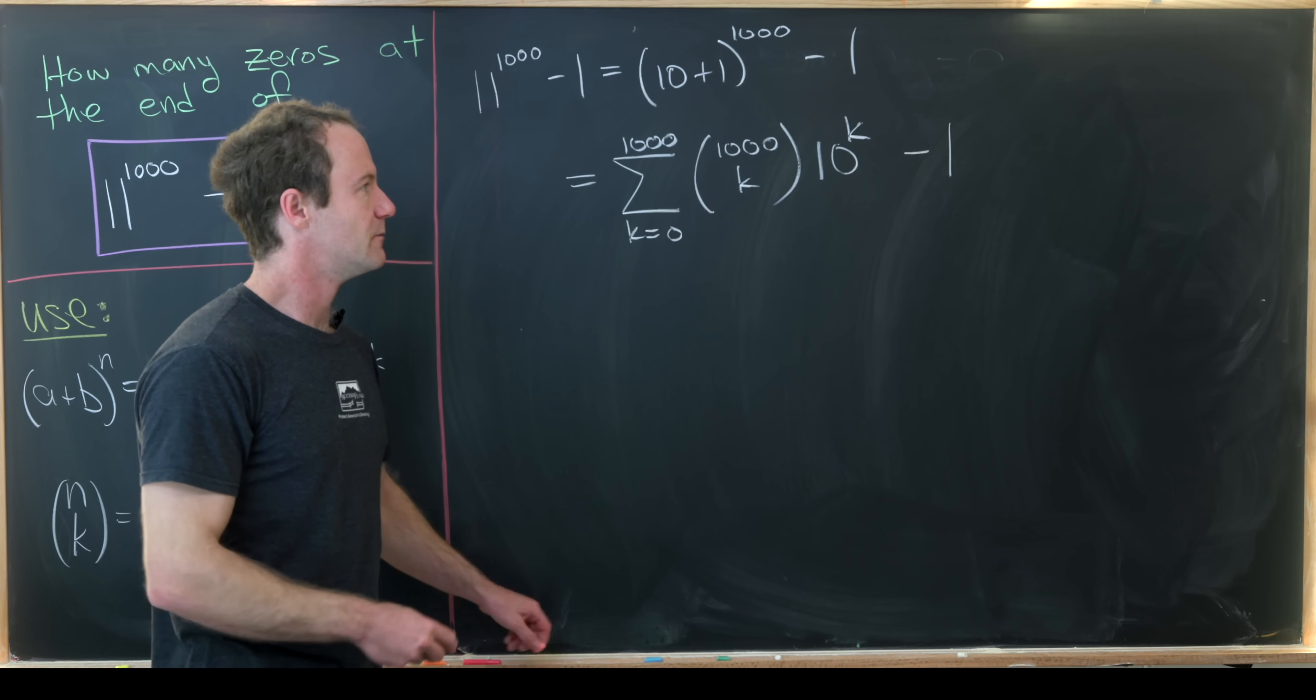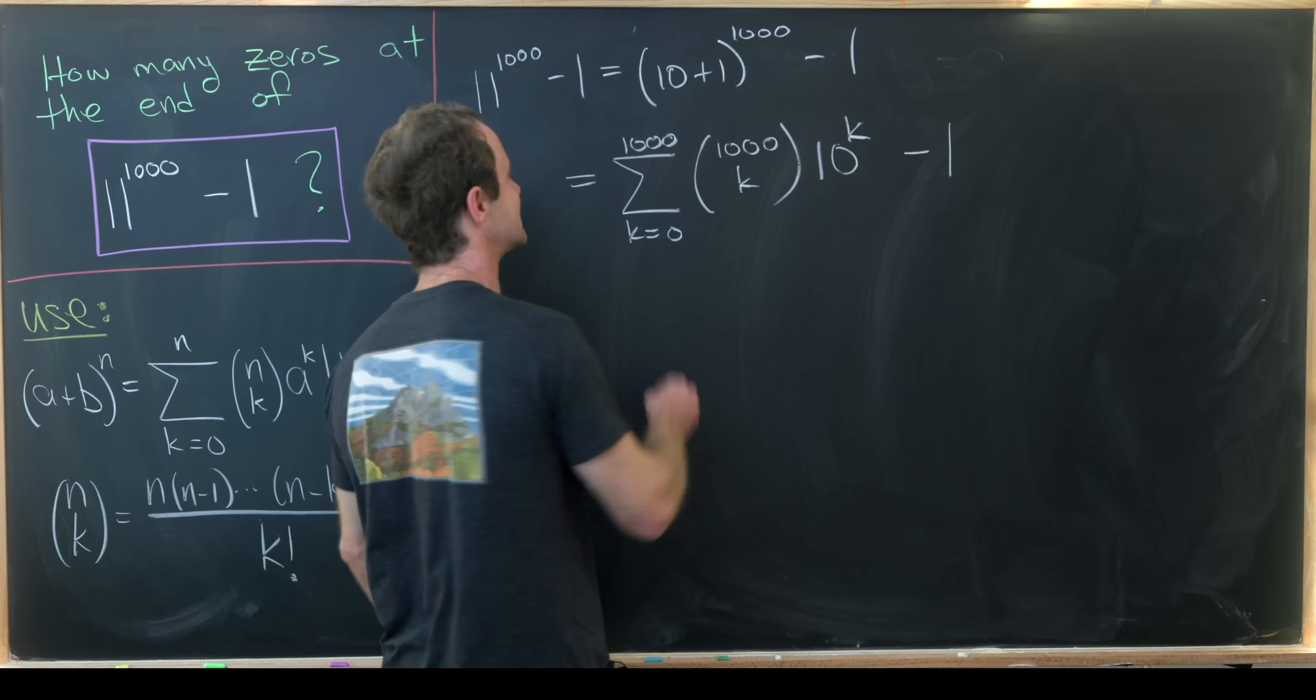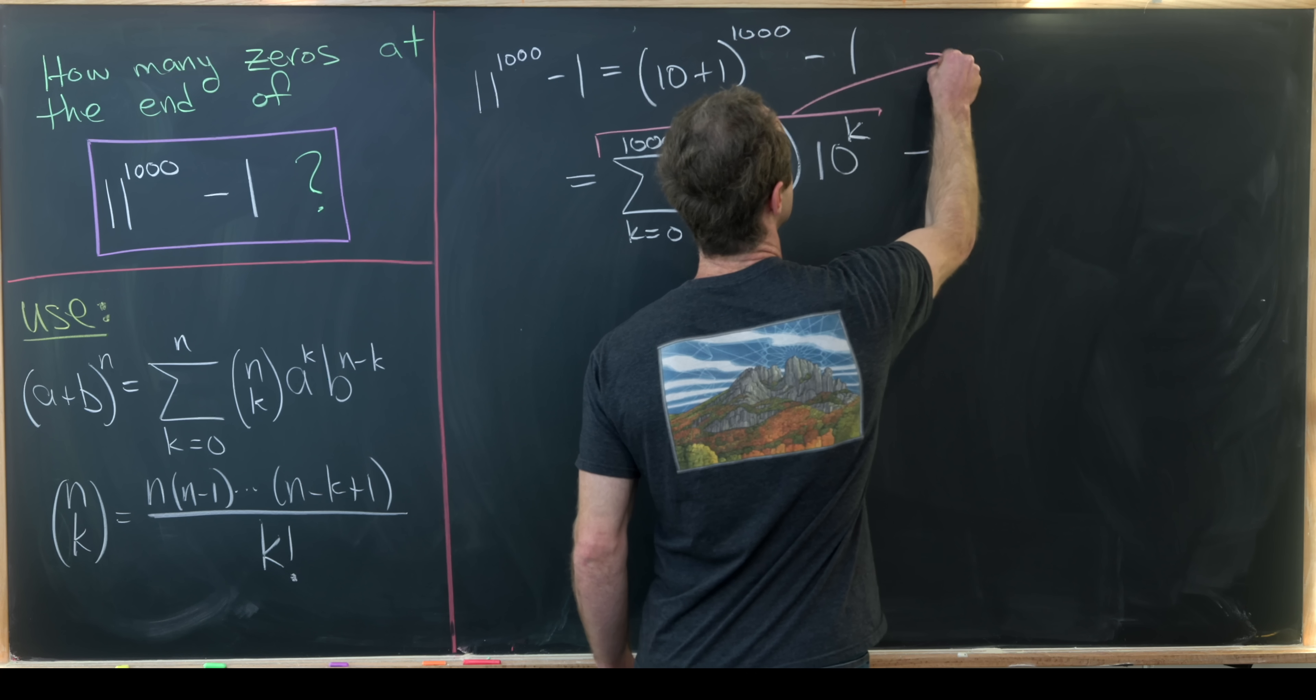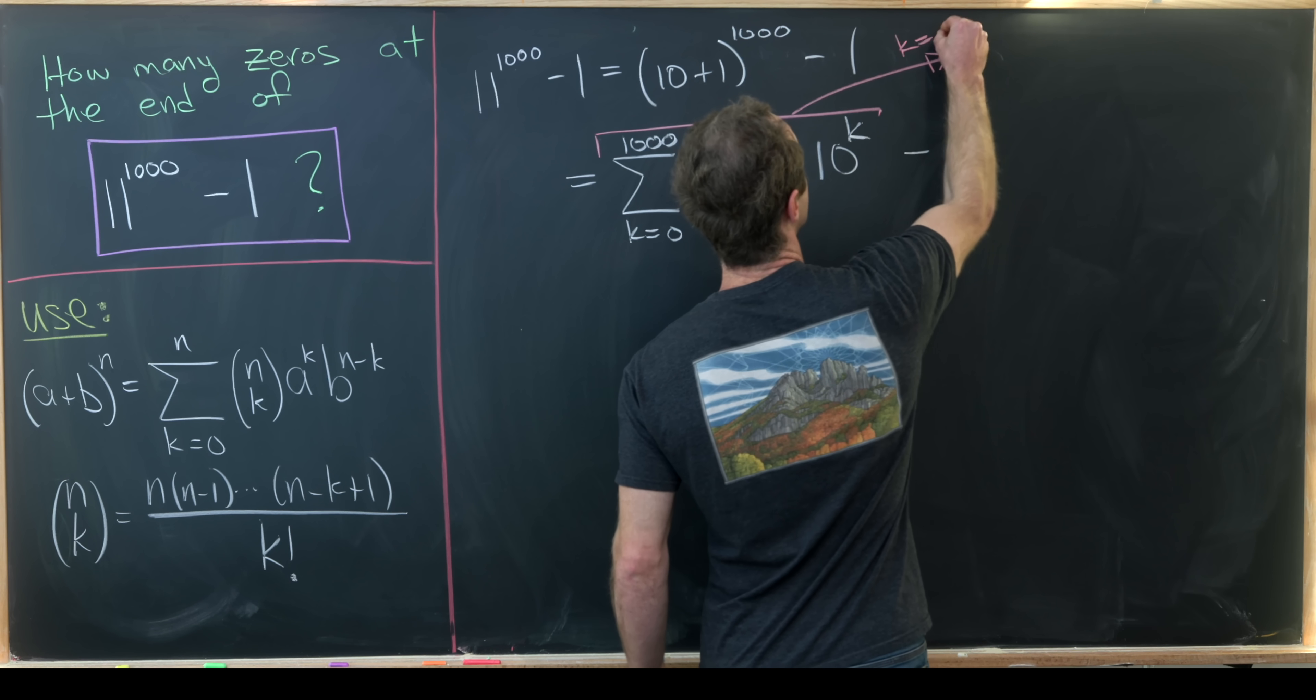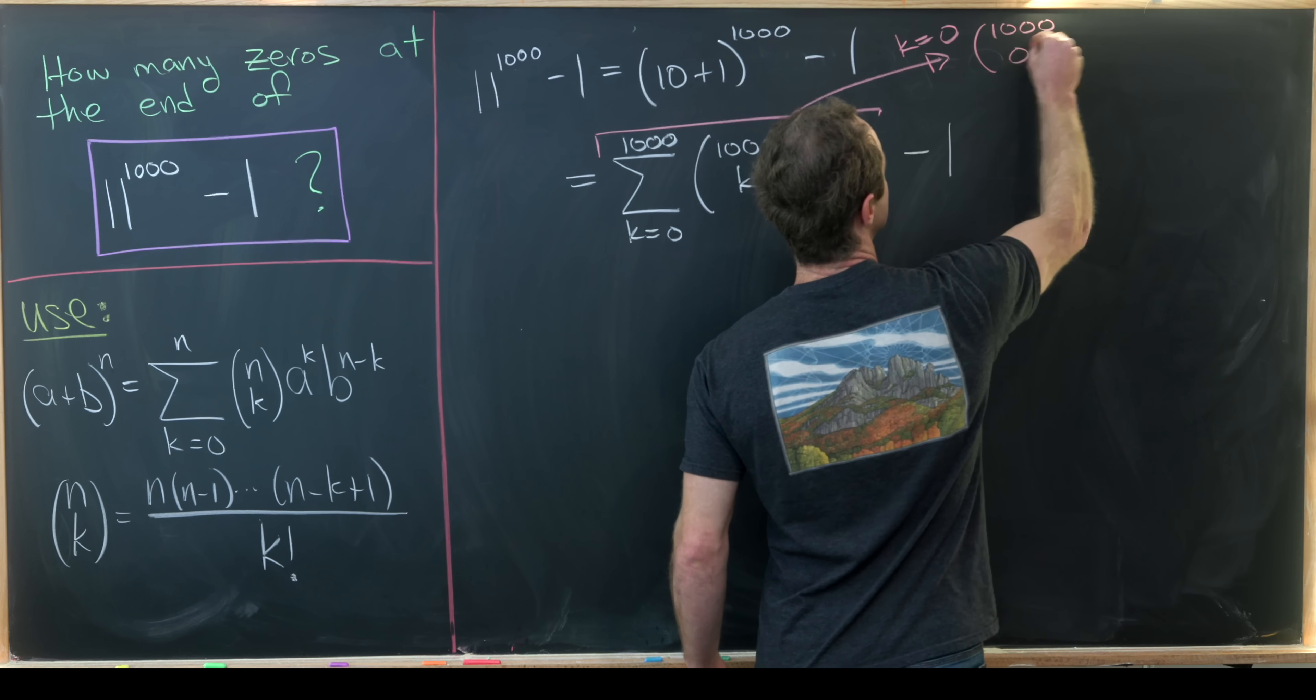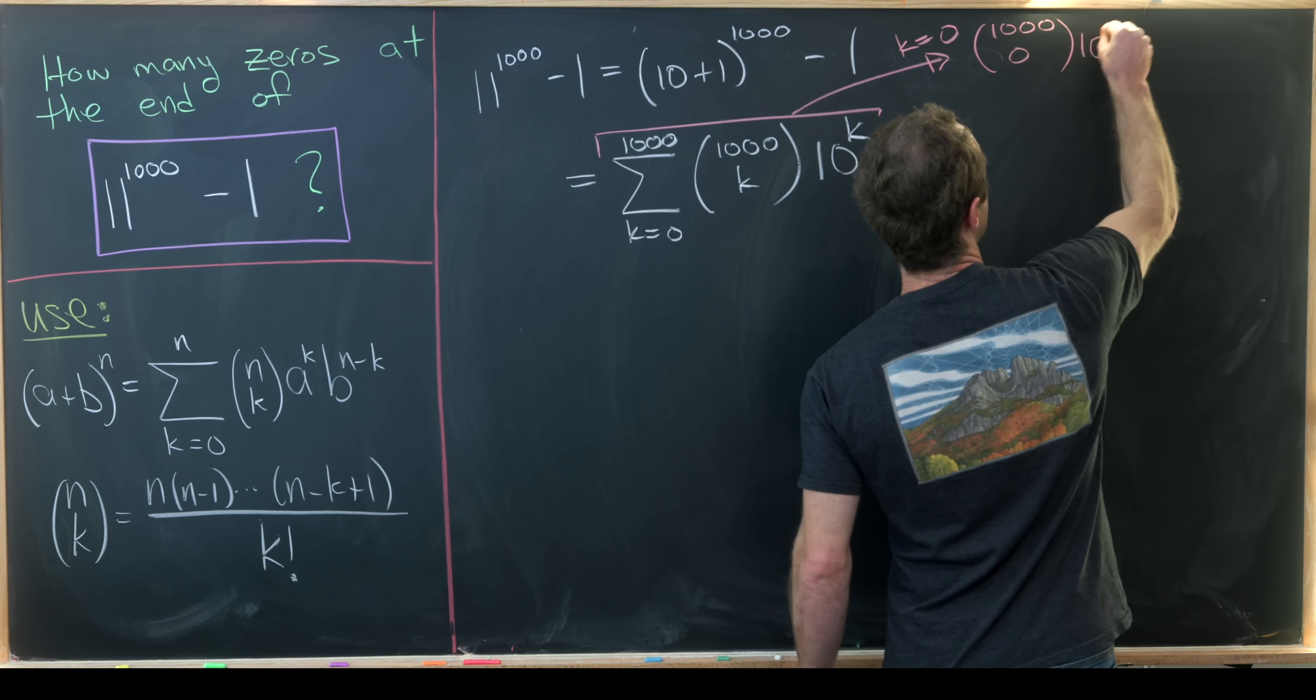But then we're going to make an immediate simplification and we'll do that by noticing that if we set k equal to 0 here we get 1,000 choose 0 times 10 to the 0.